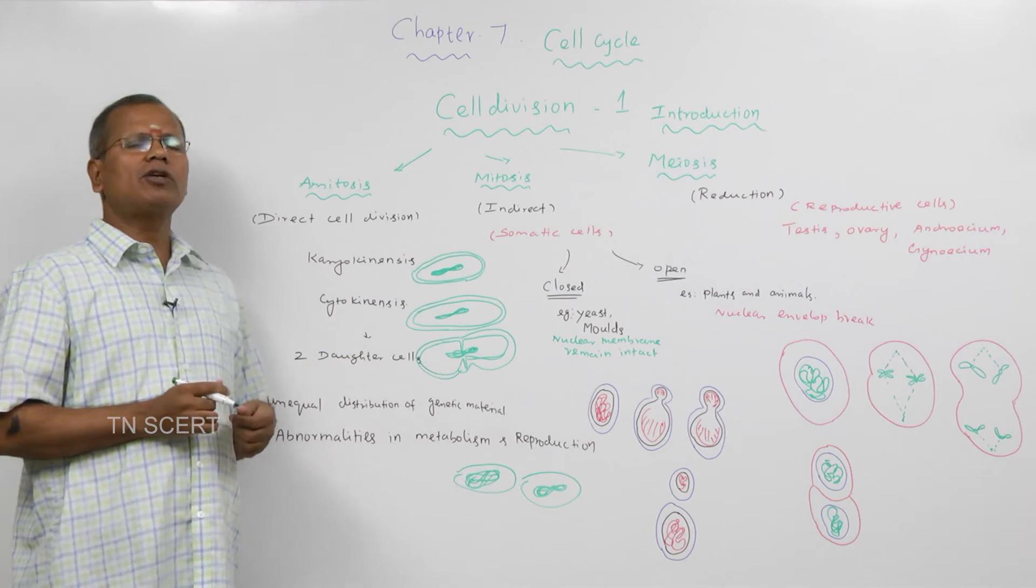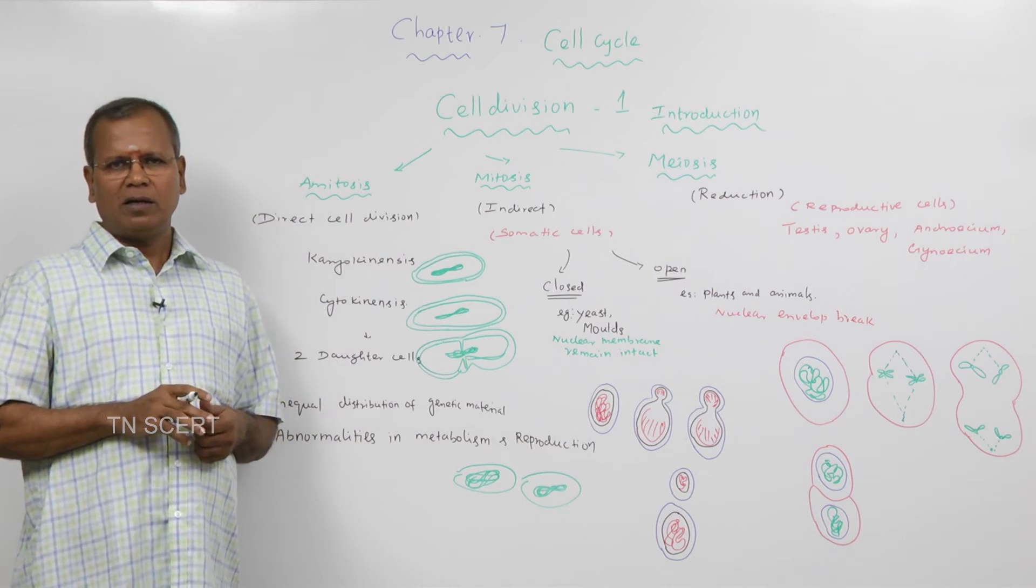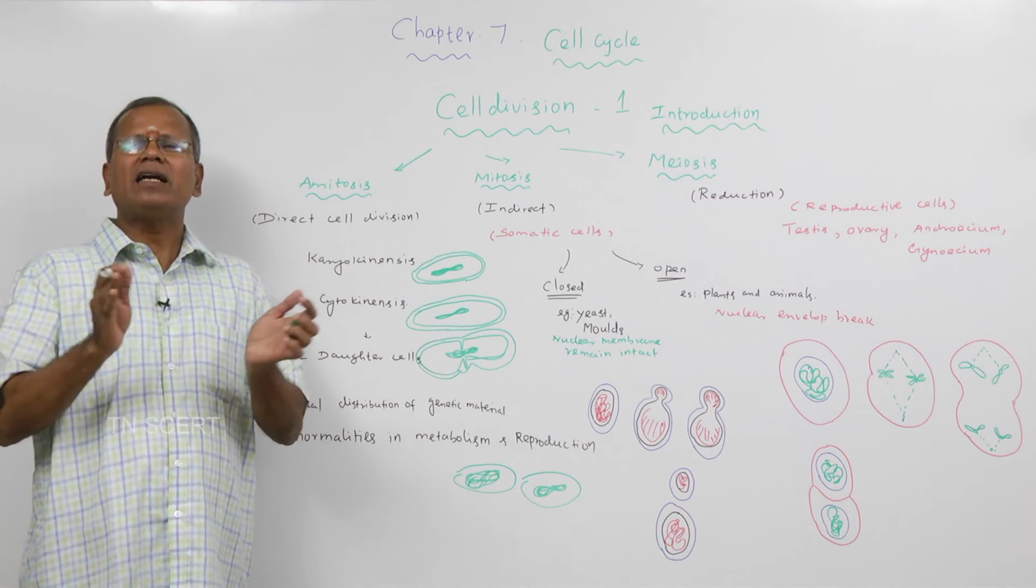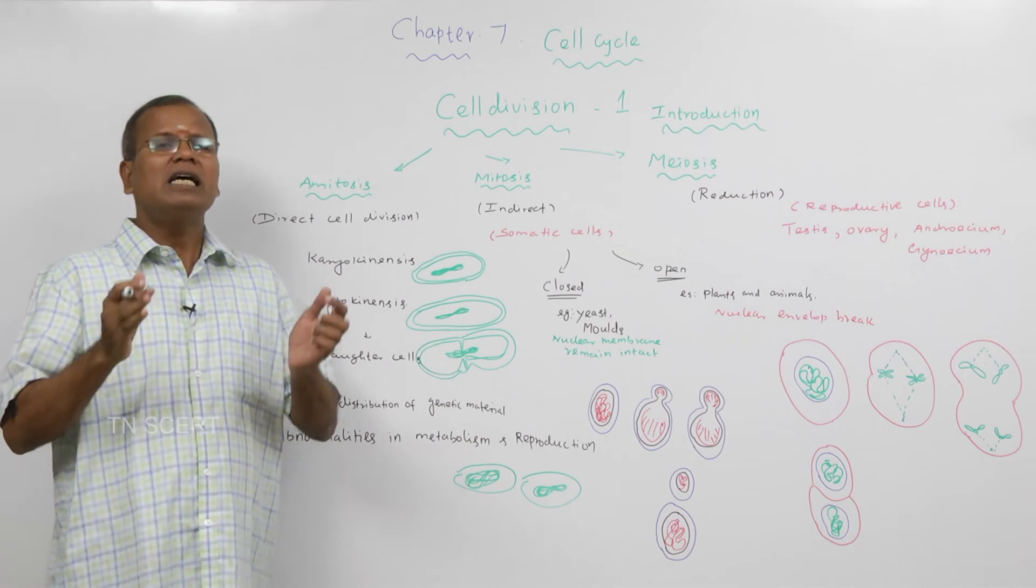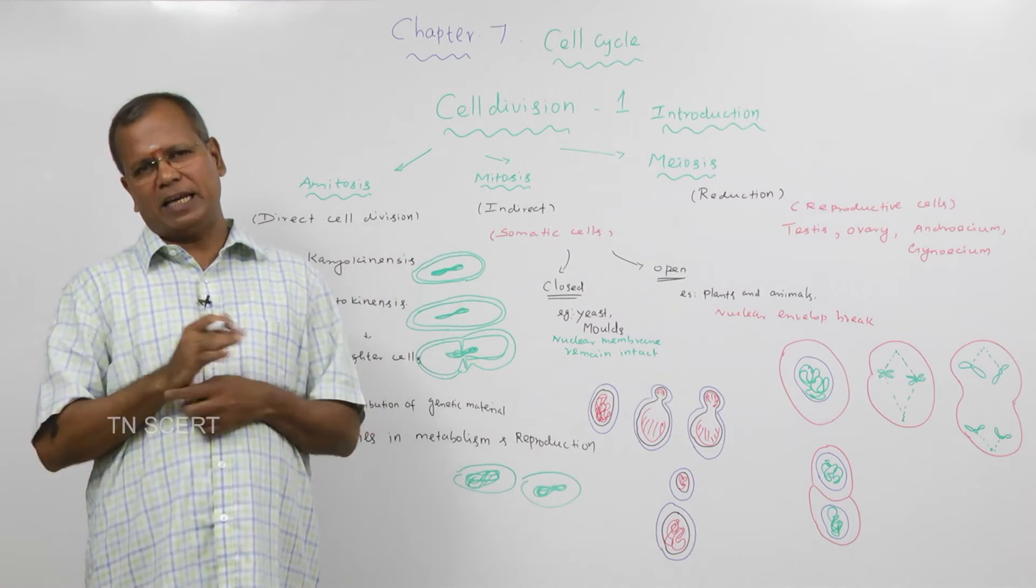Number one, unequal distribution of genetic material. Marabu purul anadu samamag irandu sayiselgalukkum chelladu. It is unevenly distributed. Sarisamamag marabu purul pahirapaduvadhi illai.